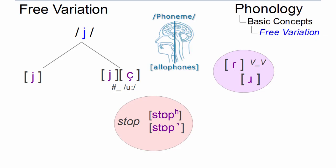Allophones of a phoneme that may appear in the same context without causing a change in meaning are called free variants.